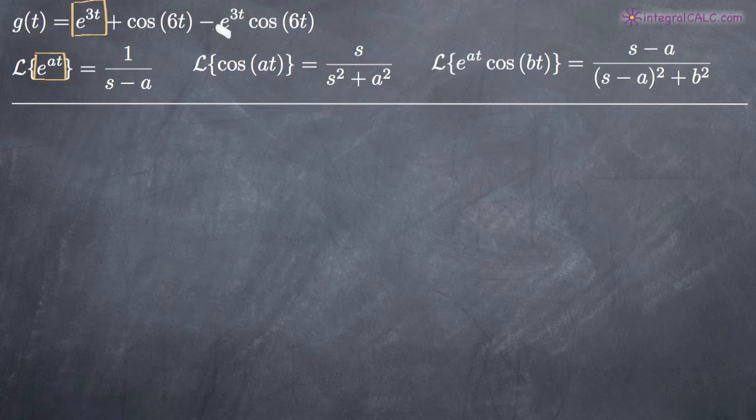Then we have a second term in our original function, cosine of 6t.